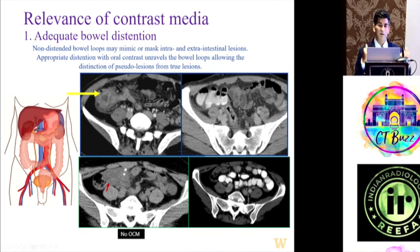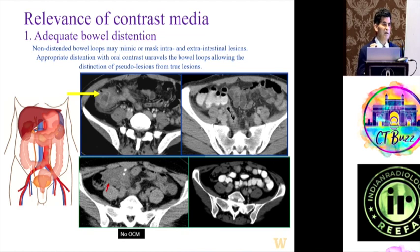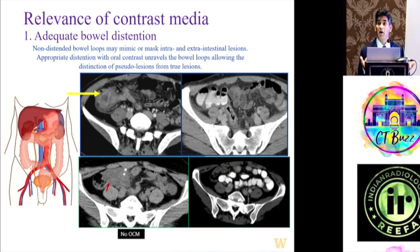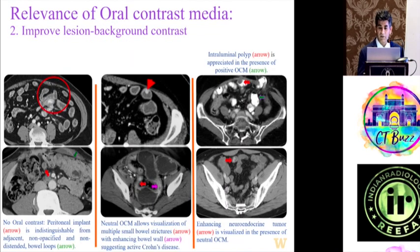Minimizing false positives is critical. In the United States, colonoscopy alone is a several-hundred-billion-dollar expense. About 25% of colonoscopies that CT generates are unindicated — we call bowel wall thickening and they find nothing. It's critical that we reduce that expense and also the associated morbidity.